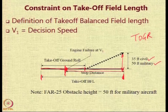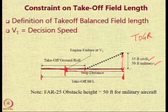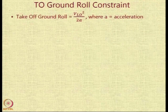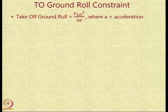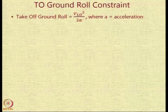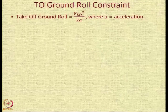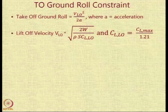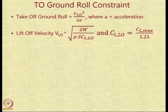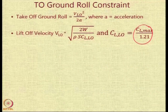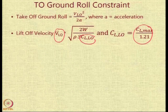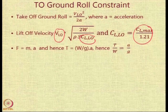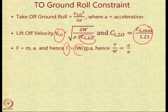Whether takeoff ground roll, takeoff distance, or balanced field length is specified, simple formulae can calculate the constraint values. The takeoff ground roll goes from V=0 to V=V_liftoff. Using V² = 2as, the ground roll equals V_liftoff² / (2a). The liftoff velocity is the speed at which lift equals weight with CL_liftoff, which is slightly lower than CL_max.